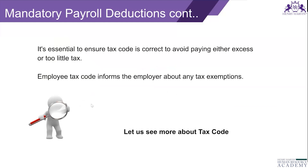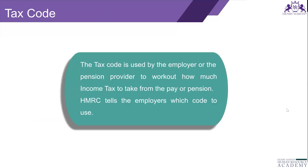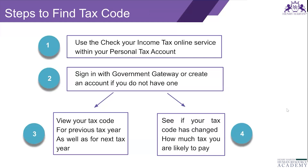It is essential to ensure the tax code is correct to avoid paying either excess or insufficient tax. The employee's tax code informs the employer about any tax exemption — it tells us the exemption amount and how taxes will be calculated. The tax code is used by the employer or pension provider to determine how much income tax to take from pay or pension. HMRC tells employees which code to use.